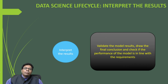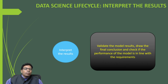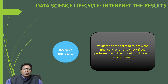The last phase is interpreting the results. Once the model is ready, we validate the model results, draw final conclusions, and check whether the model's performance meets the required standard — that is, whether the original business problem has been solved. These are the main phases in the data science life cycle.